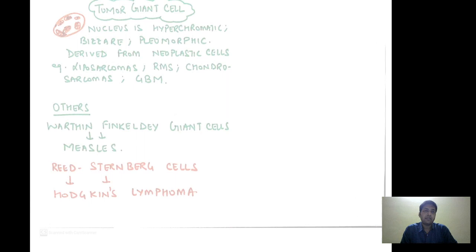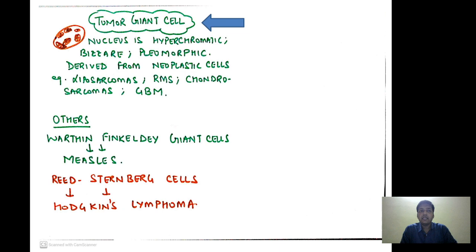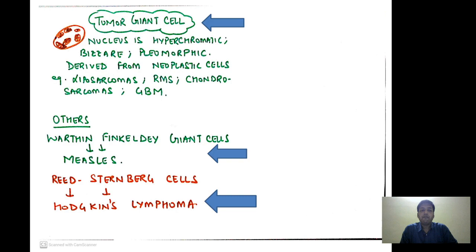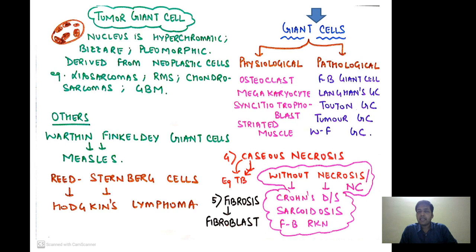Tumor giant cells are formed in various tumors — nuclei are hyperchromatic, bizarre, and pleomorphic, derived from neoplastic cells; examples include liposarcomas, rhabdomyosarcomas, chondrosarcomas, and glioblastoma multiforme. Other giant cells include Reed-Sternberg cells in Hodgkin lymphoma and Warthin-Finkeldey giant cells seen in measles. Giant cells can be physiological — examples being osteoclasts, megakaryocytes, syncytiotrophoblast, and striated muscle — or pathological, including foreign body giant cells, Langhans giant cells, Touton giant cells, tumor giant cells, and Warthin-Finkeldey giant cells.